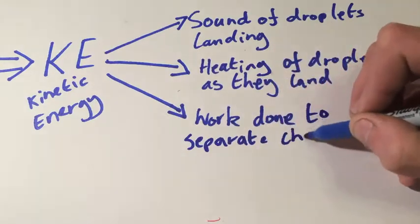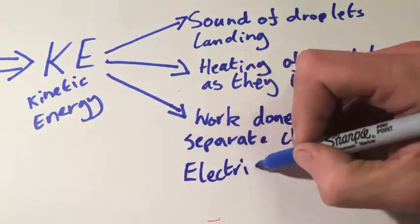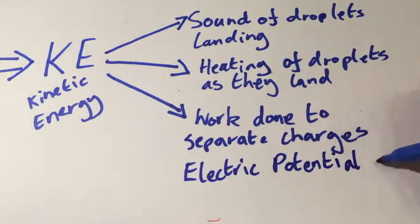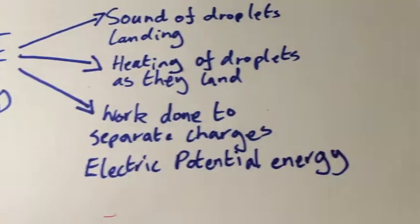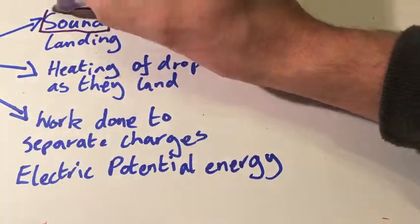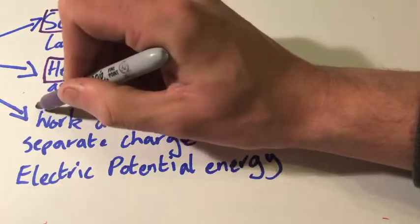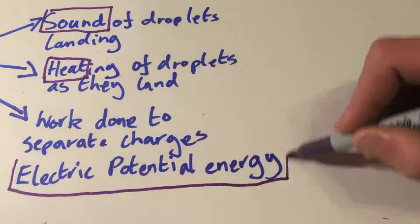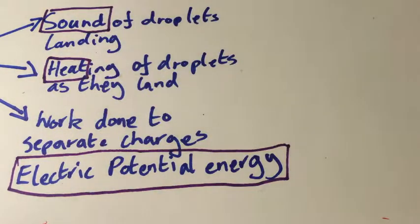And thirdly, some of the kinetic energy is converted to electrical potential energy because some of the energy was needed to separate the positive and negative charges. When you've separated the charges, there is the potential for these charges to come together and start moving towards each other, thus releasing their energy as a spark.